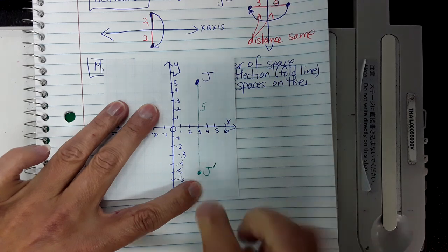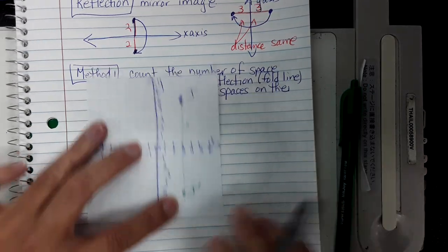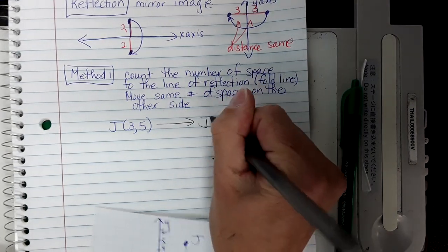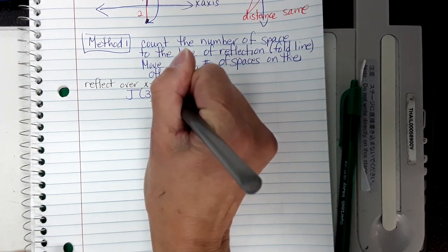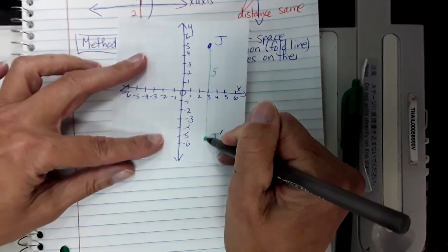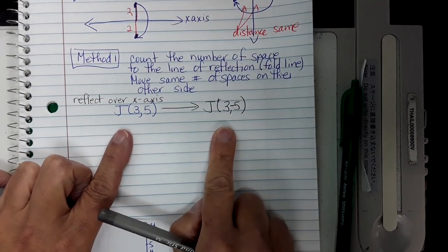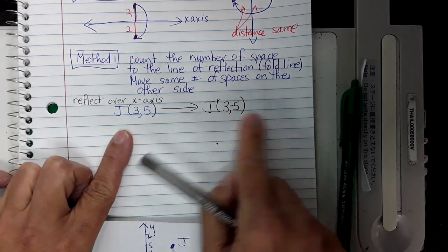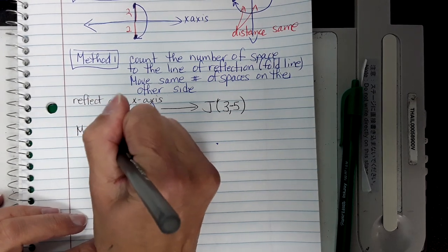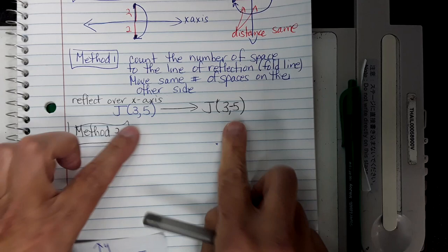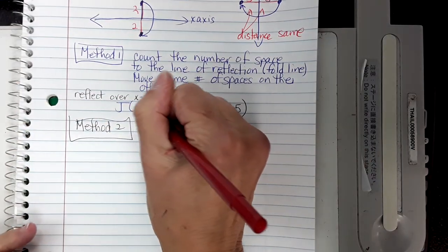This reflection point I'm going to call J prime — that's what we do when we're reflecting points. So if we reflect over the x-axis, this new point becomes (3, negative 5). Now compare the x-parts and the y-parts. When you reflect over the x-axis, the x stayed the same, and the y-part became its opposite — 5 became negative 5.